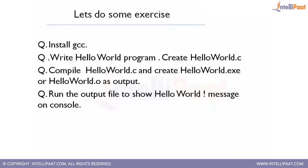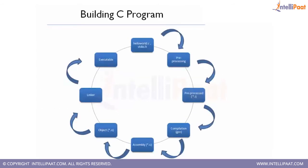The machine-level instructions in the .o file are taken by the linker. If multiple .o files are present, the linker merges them to produce a single executable file. That is how, at a high level, your C program is built. Now let's get started with installing a GCC compiler.